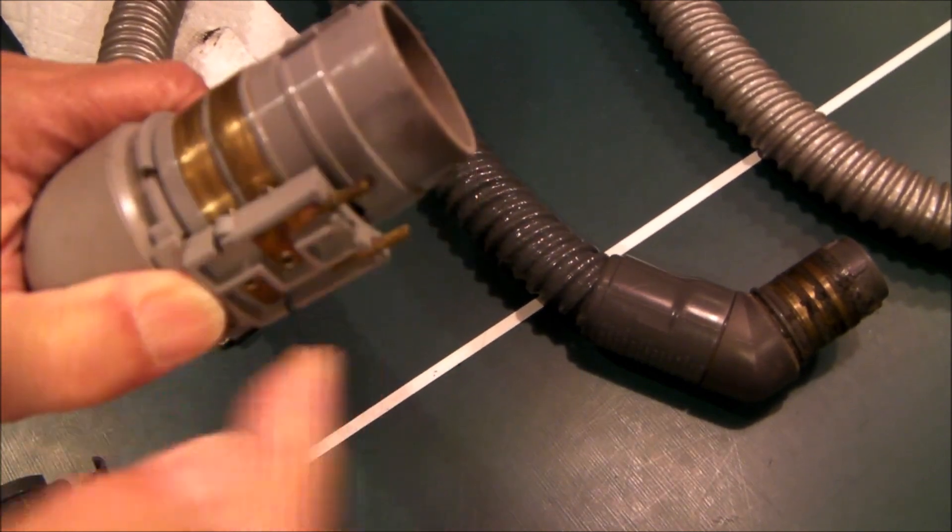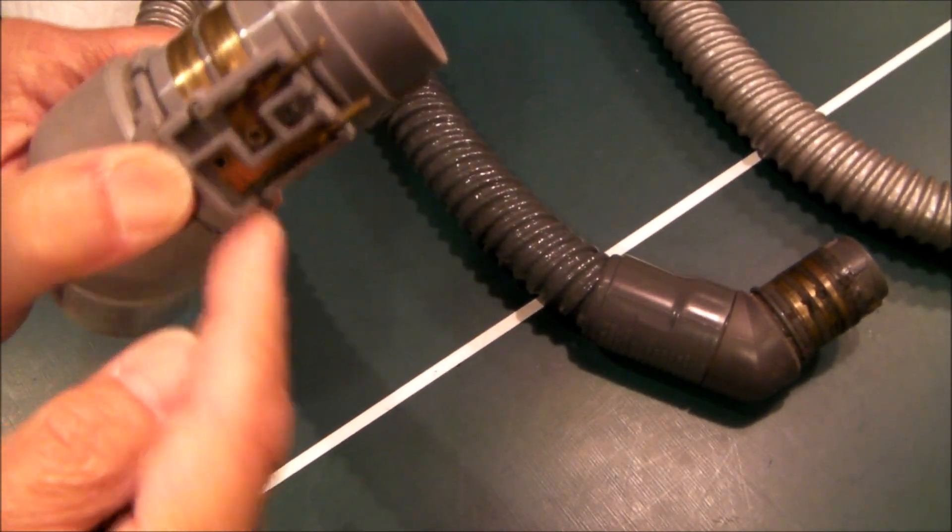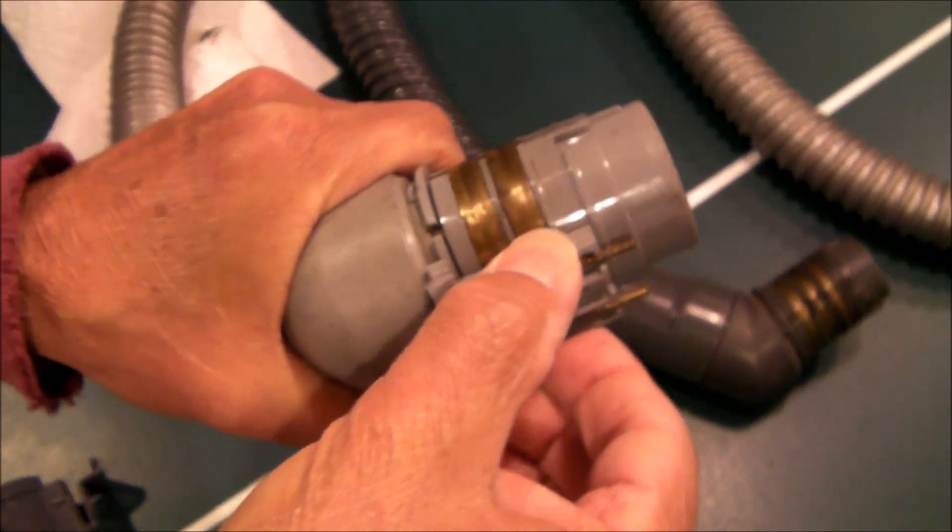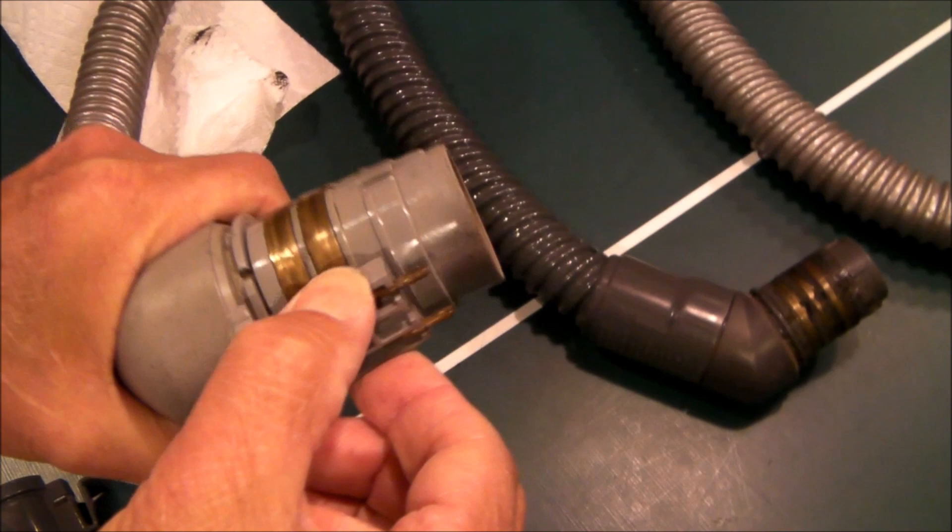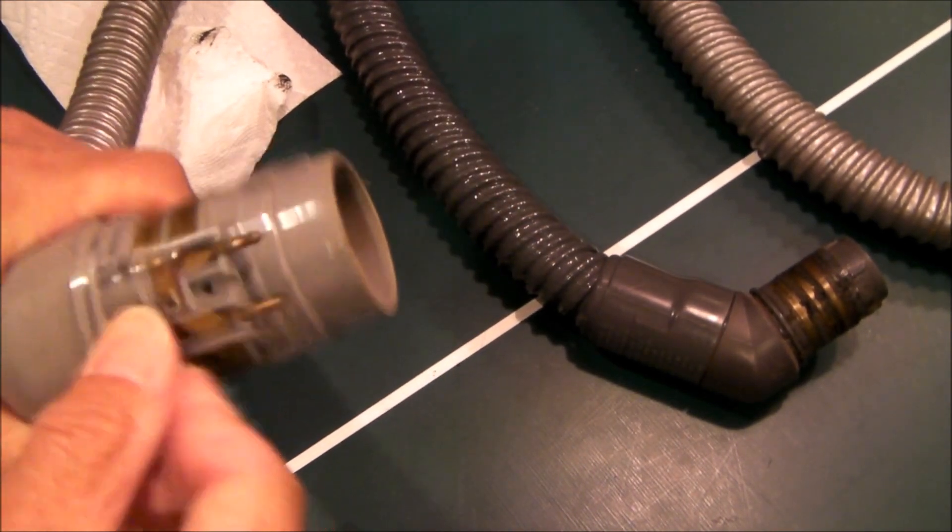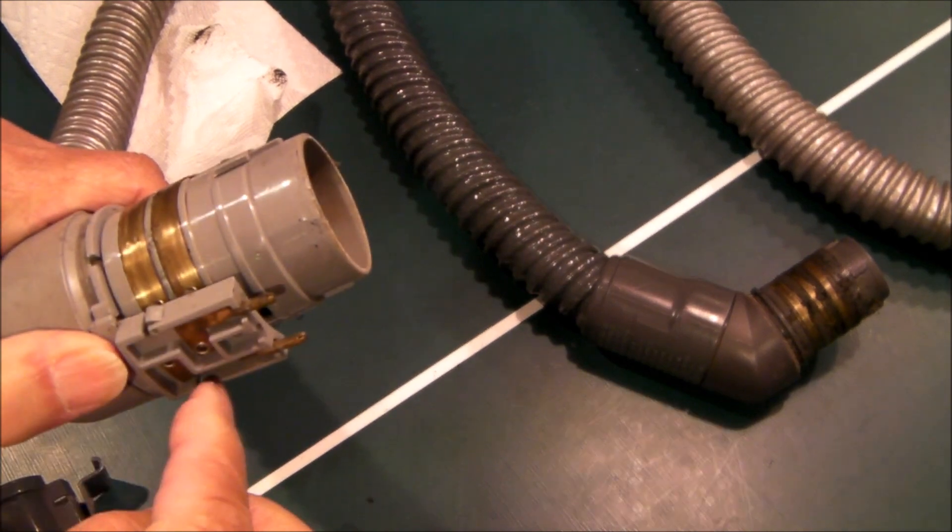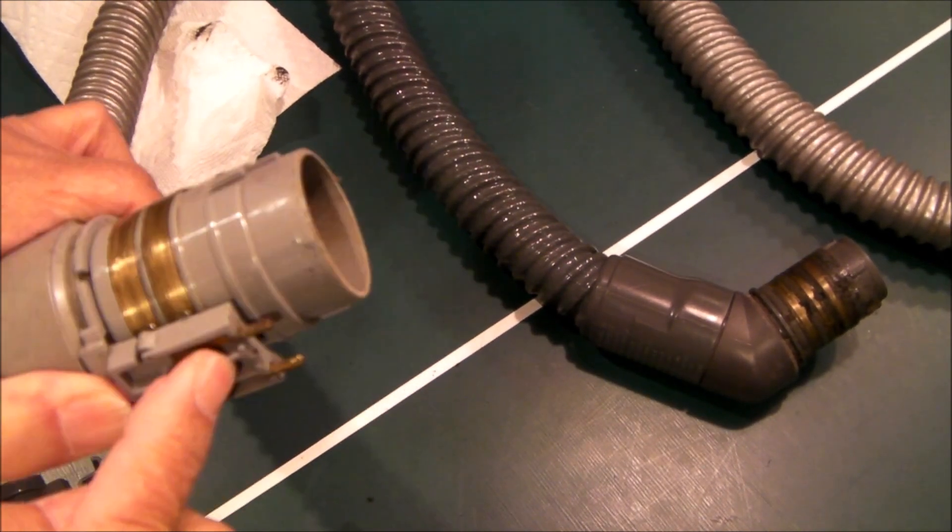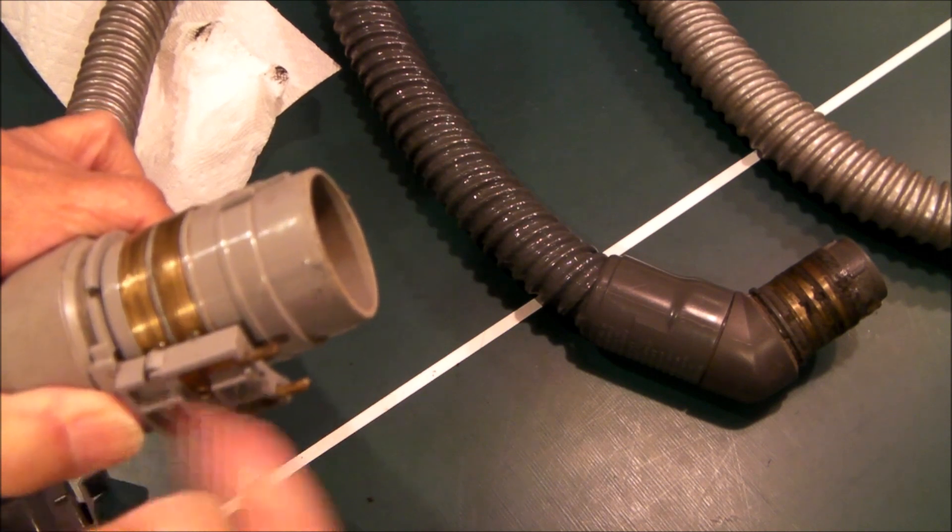So once you depress these two tabs, you should be able to grab the cuff, as I've shown here with my left hand, and pull the cuff. And when you pull the cuff, that will pull this plug out at the same time. So release the two tabs and pull on the cuff. This switch contact mechanism should come out with the cuff.